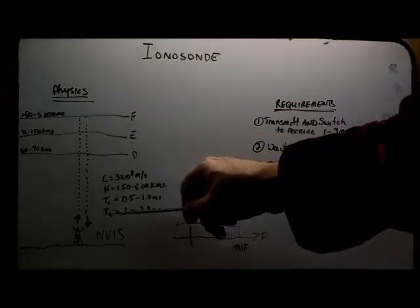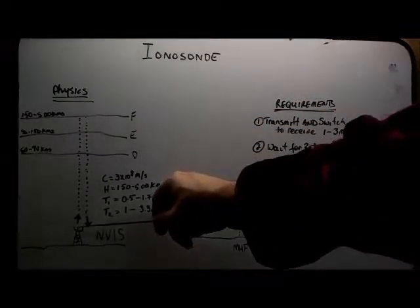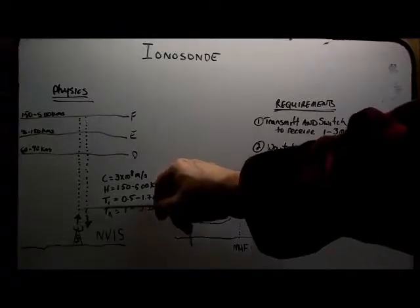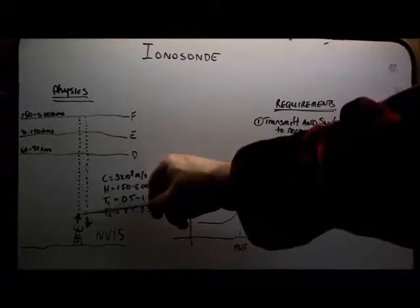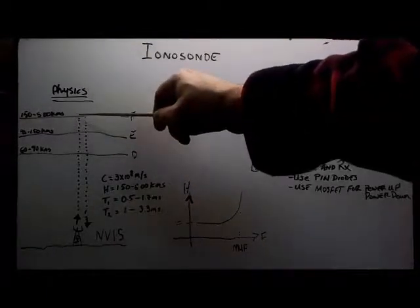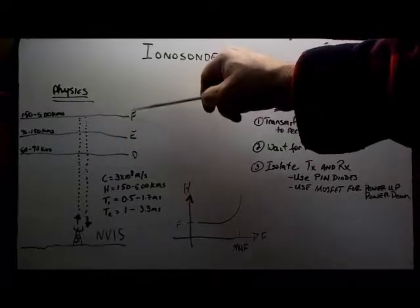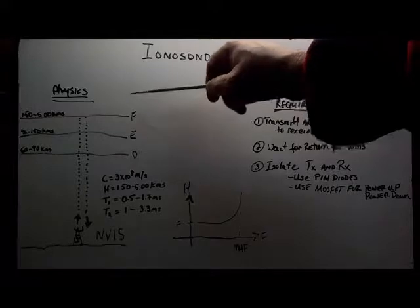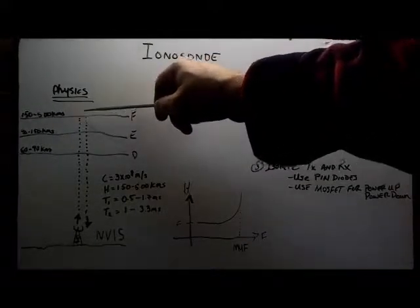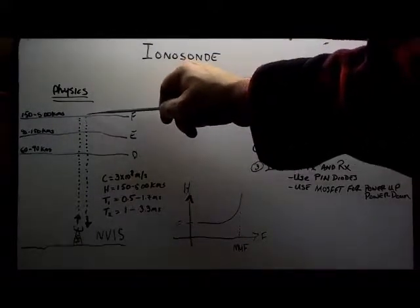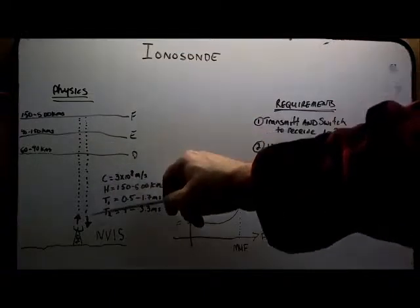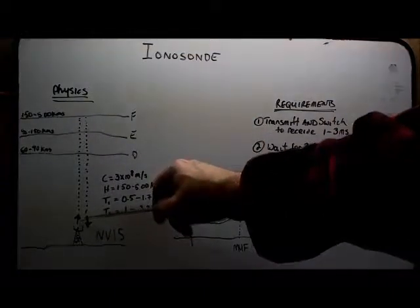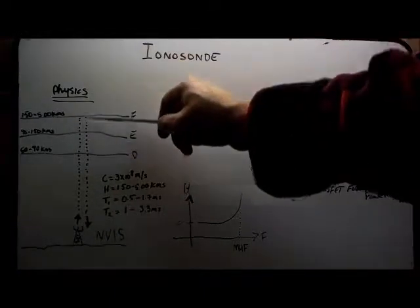Basically the way this works is that you're sending up a pulse, a signal that goes directly vertical, hits the F layer. For this I'll be using 40 meters, so any reflection is coming off the F layer. Then the return signal comes back down, and by timing how long the signal takes to go up and come down,